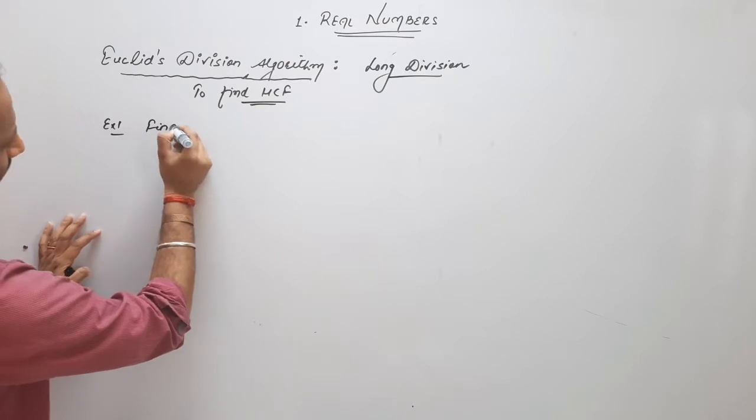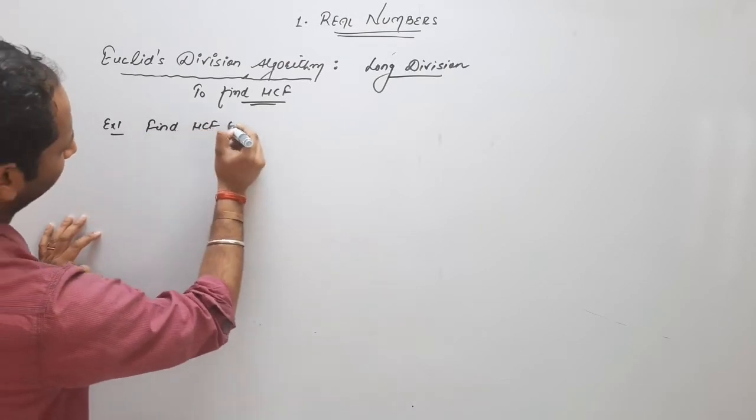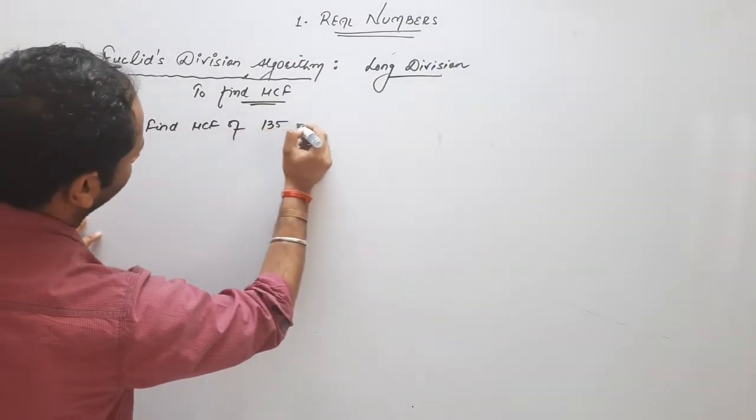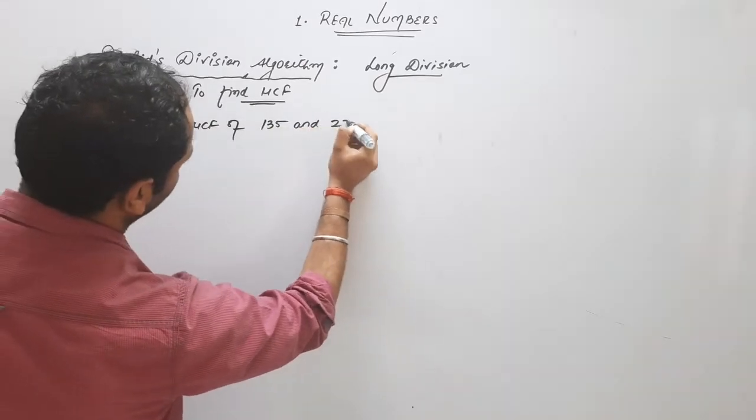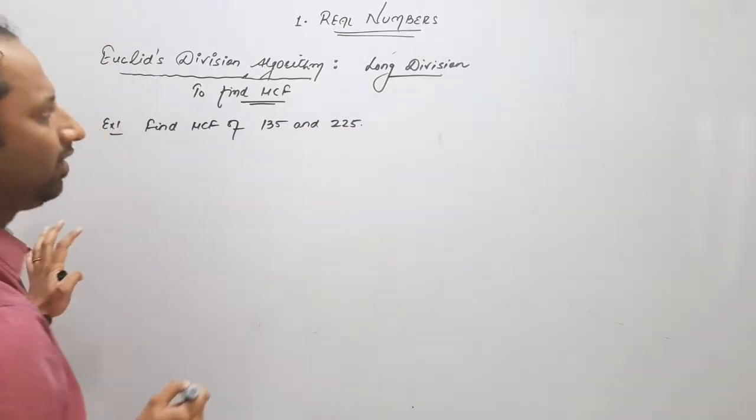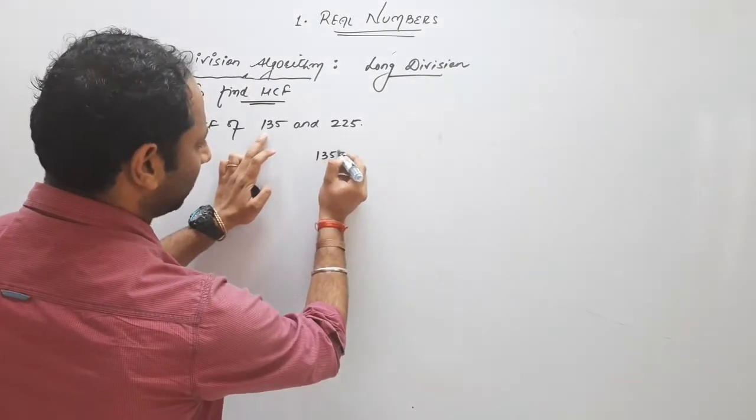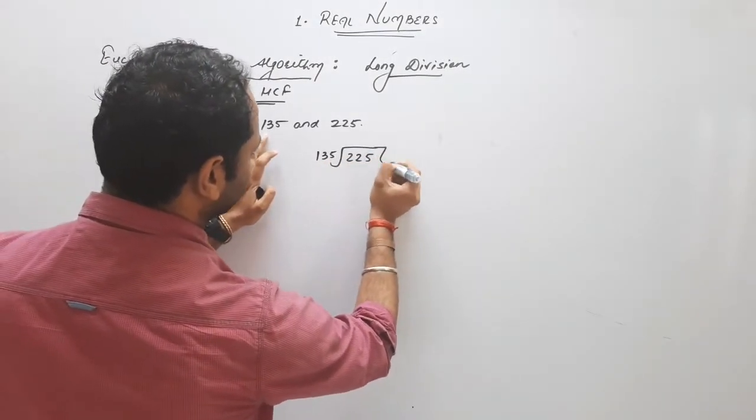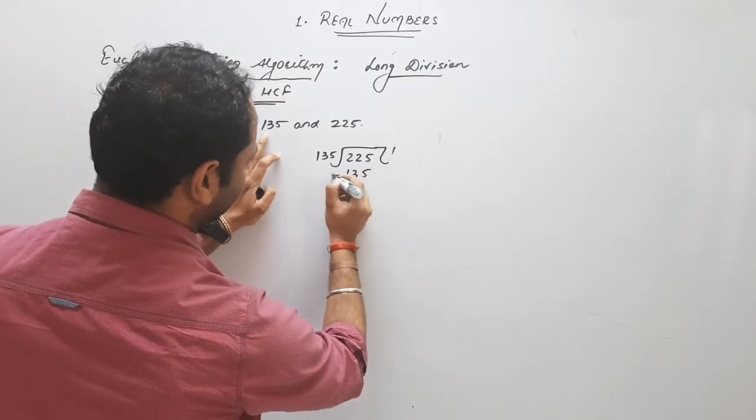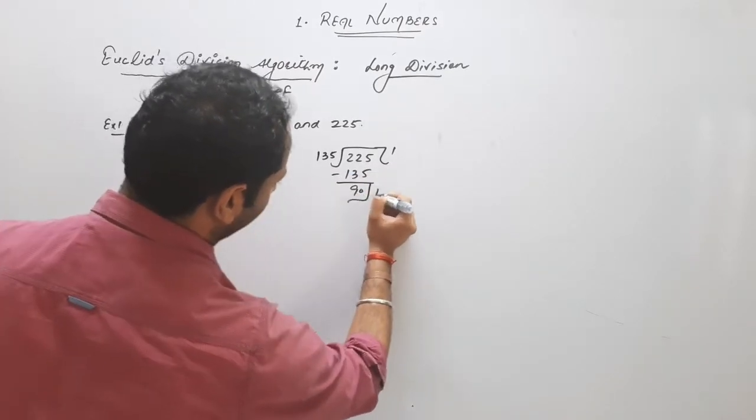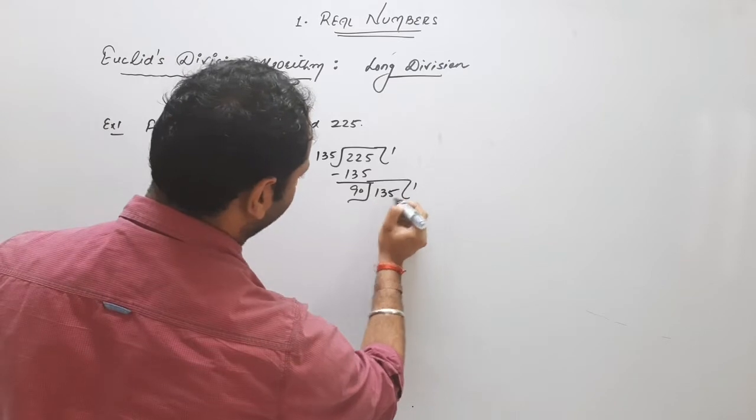Find HCF of 135 and 225 by Euclid division algorithm. We know this is a smaller number and this is a larger. So how we solve it? 135, 1, 035, 90. It is in your mind now.